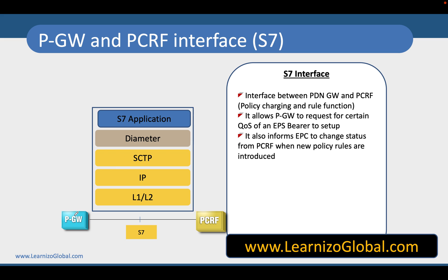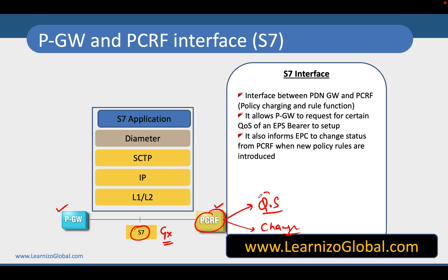In this video we are going to talk about another interesting interface called S7, which is also referred to as the Gx interface. It is the interface used between the PGW and PCRF. PCRF is typically used for two different mechanisms: one is quality of service (QoS) management, and the other is charging management. All QoS policies are stored in the PCRF.